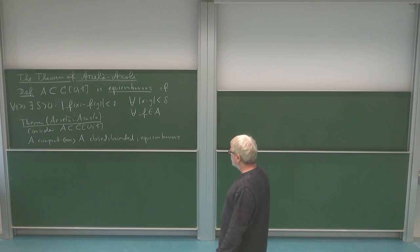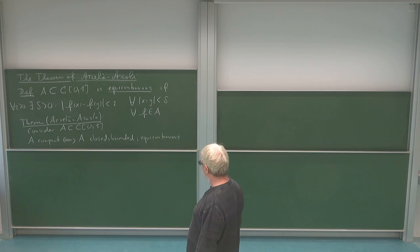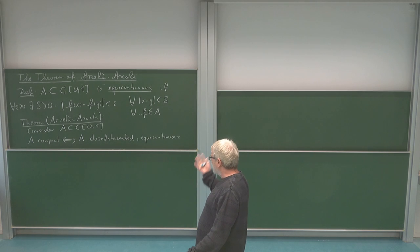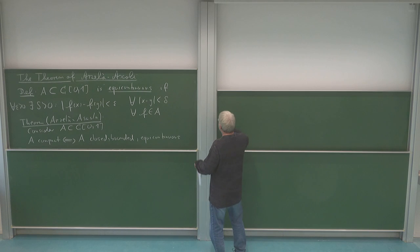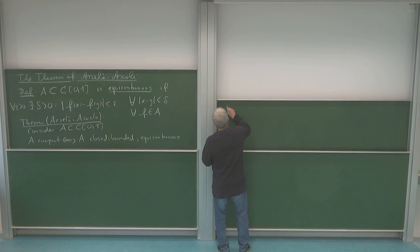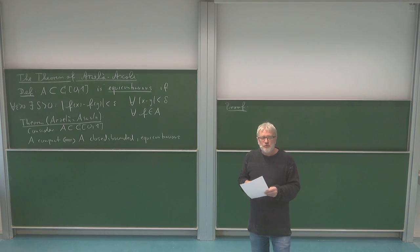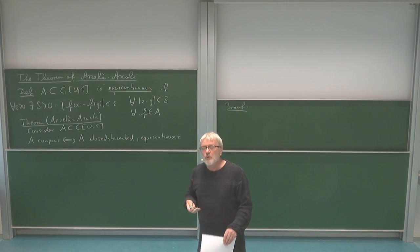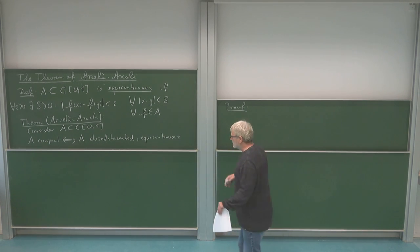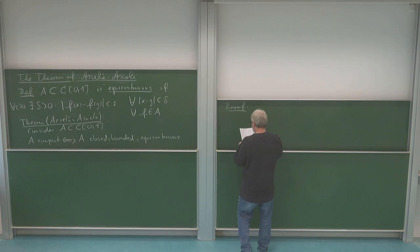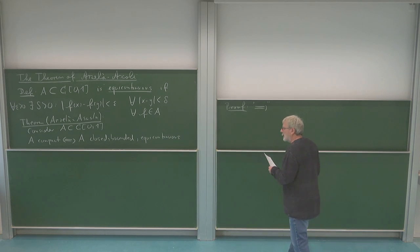Let us start the proof of Arzelà-Ascoli. We are claiming the equivalence of compactness with three properties, and to prove this we have to prove two directions. One direction is quite simple, namely going from compactness to those properties. We start with this one, using what we observed in our motivation: if we have a convergent sequence then it should be equicontinuous.